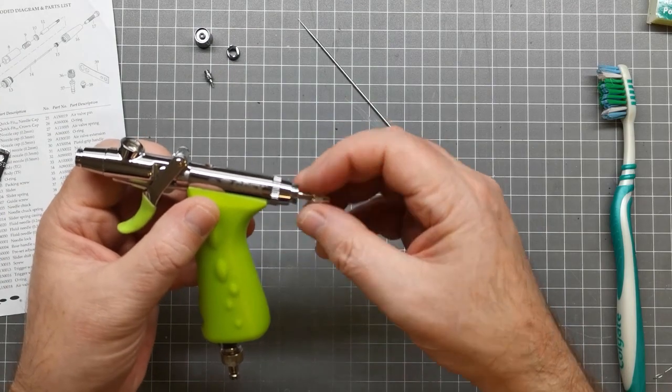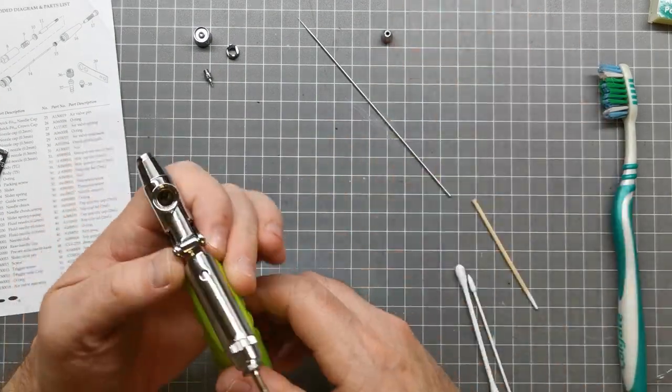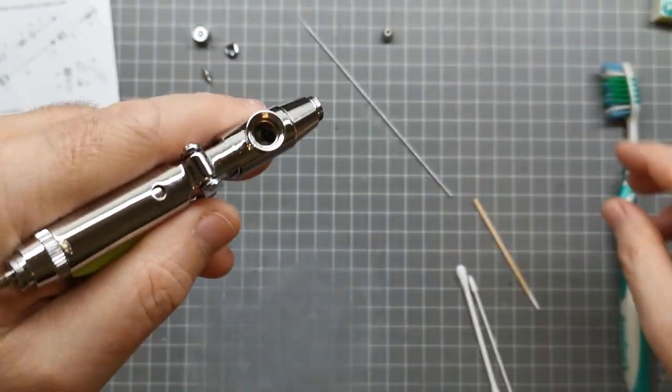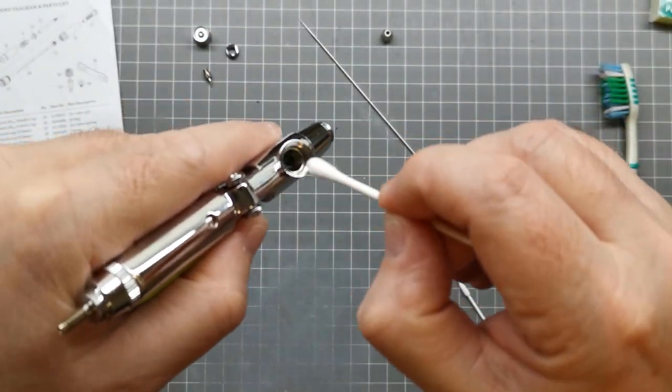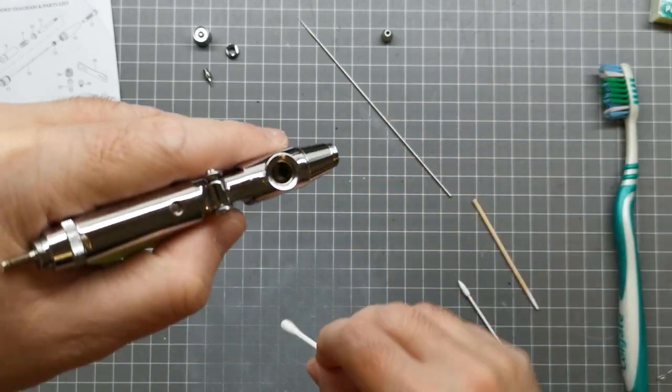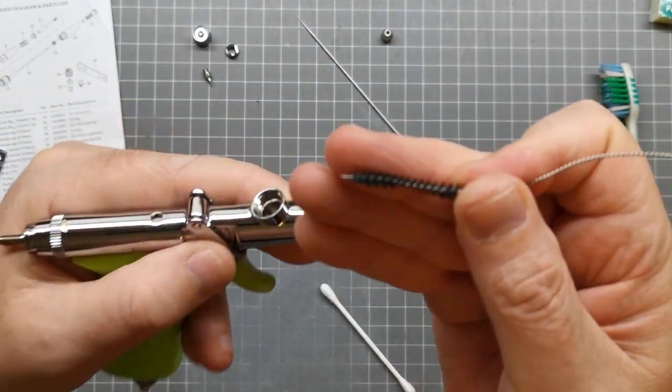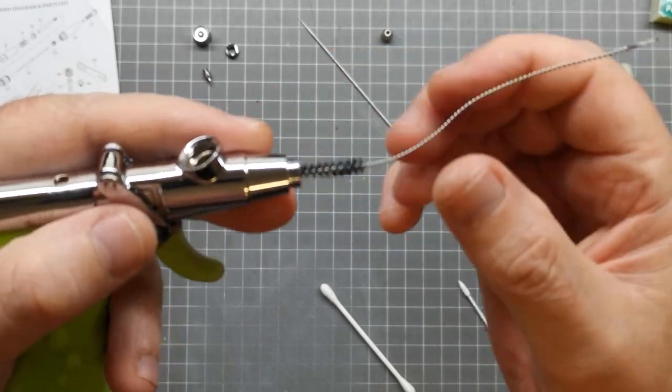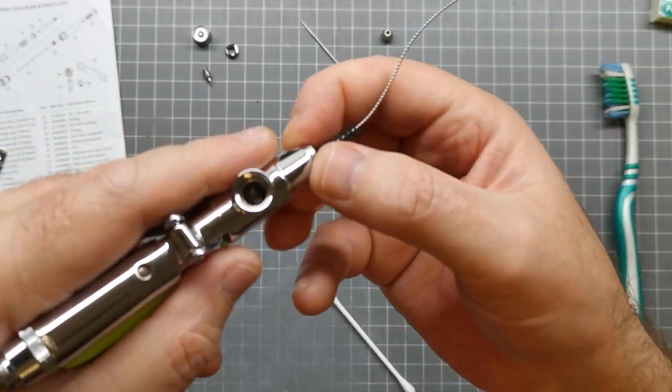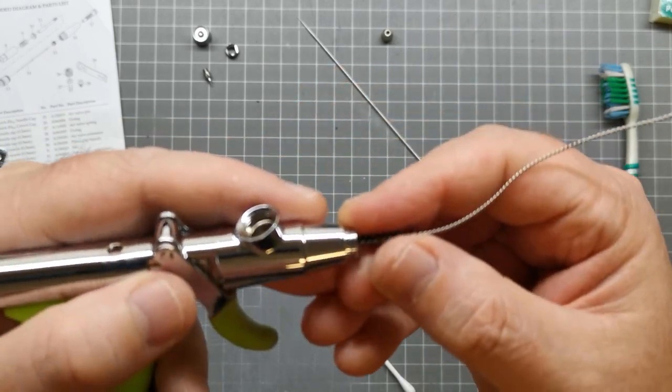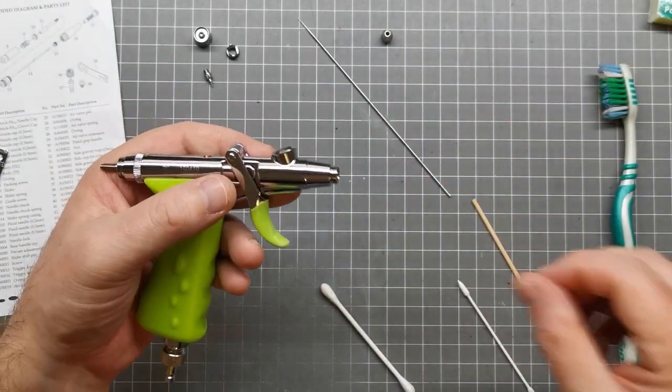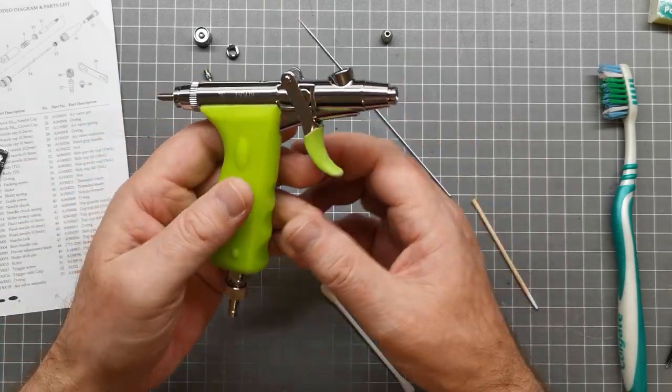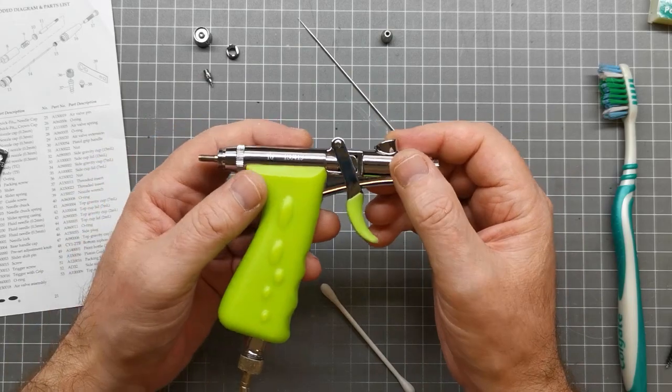Take the chuck nut off. Then I will get in here with some thinners and a cotton bud and clean in the hole here. I've got a small brush like this which I will slide up and down inside the airbrush with a bit of thinner on it. That's my process. I'll do that after every airbrushing session.